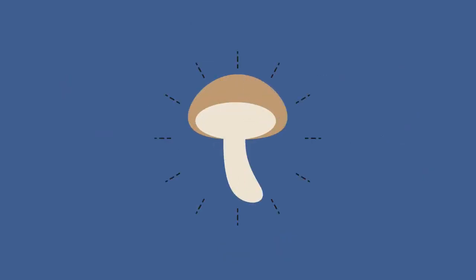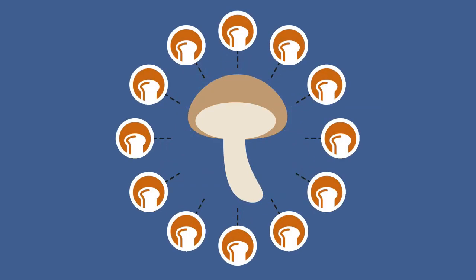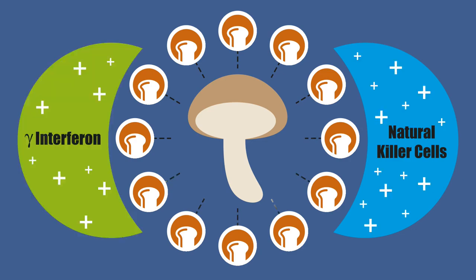Shiitake mushrooms contain a polysaccharide called lentinen. Lentinen has many immunopotentiating properties, such as boosting the immune function of natural killer cells and increasing the production of gamma interferon. This helps us fight infections.